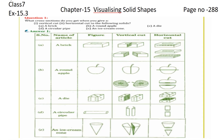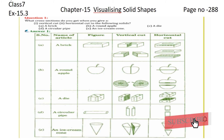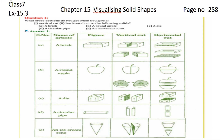Hello everyone, this is Preeti here with another exercise — Exercise 15.3, page number 288, question number one: what cross-section do you get when you give a vertical cut or a horizontal cut to the following solids? Starting with the first one — a brick. This is the figure of the brick we are having.